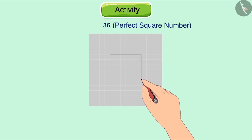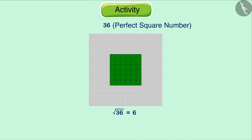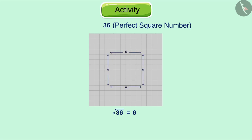You now know that the number 36 is also a perfect square, which means we can draw a square of 36 square units on a graph paper. You can see that this square is made up of 36 small squares. We know that the square root of 36 is 6, so the sides of this square are equal to 6 units.